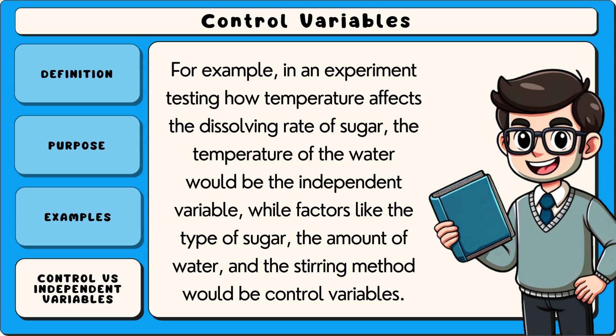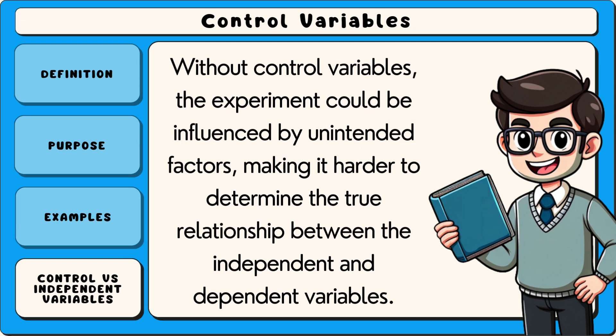For example, in an experiment testing how temperature affects the dissolving rate of sugar, the temperature of the water would be the independent variable, while factors like the type of sugar, the amount of water, and the stirring method would be control variables. Without control variables, the experiment could be influenced by unintended factors, making it harder to determine the true relationship between the independent and dependent variables.